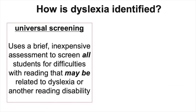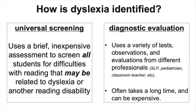There are two aspects of dyslexia identification you should know about. The first is called universal screening. Just like your doctor would use a screening test to figure out if you are at risk for certain diseases, schools can use a brief, inexpensive, but hopefully evidence-based assessment to screen all of their students for difficulties with reading that may or may not be related to dyslexia or some other reading or print-based disability. It's important to understand, though, that this is not the same thing as diagnosing dyslexia in an individual student.